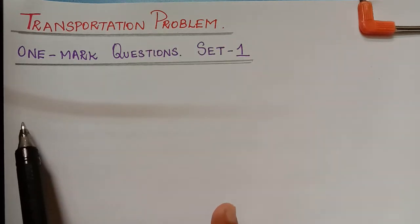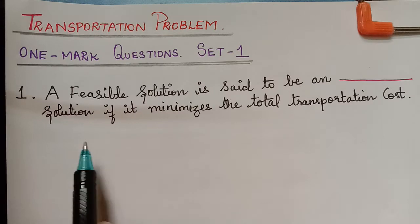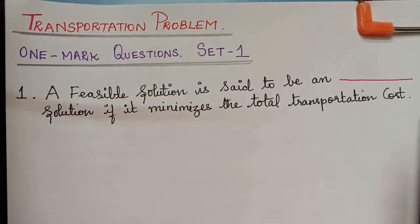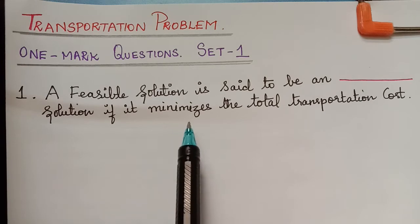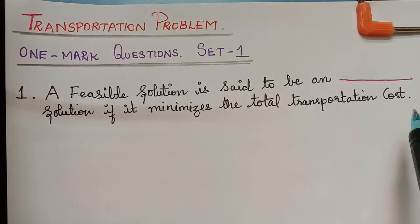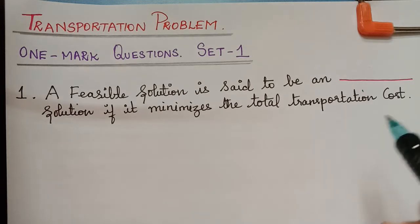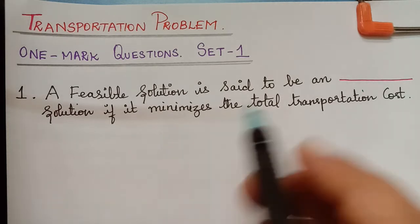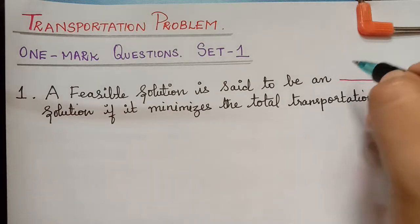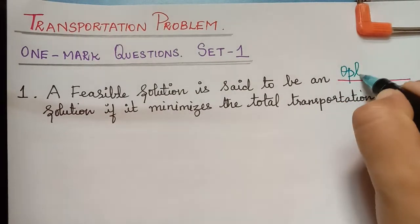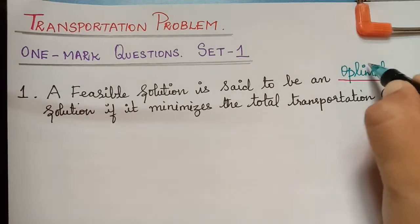The first question is: a feasible solution is said to be a dash solution if it minimizes the total transportation cost. In a transportation problem, the solution that minimizes the cost is known as the optimal solution. So the answer for this question is optimal solution.